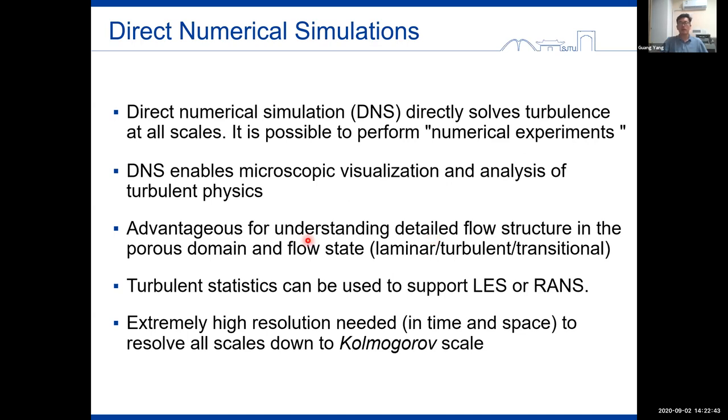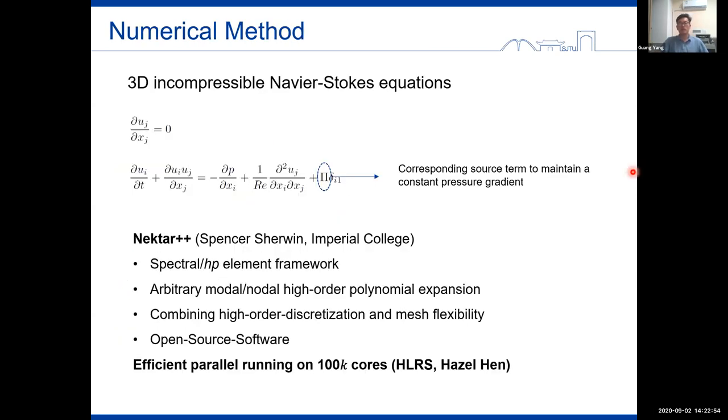Well, the main drawback of DNS is that extremely high resolution is needed in both time and space. In this study, we used the open source CFD software Nektar++ to solve the 3D incompressible Navier-Stokes equations. It combines high-order discretization and mesh flexibility. The simulations run parallel with 100,000 cores on a supercomputer in Stuttgart.